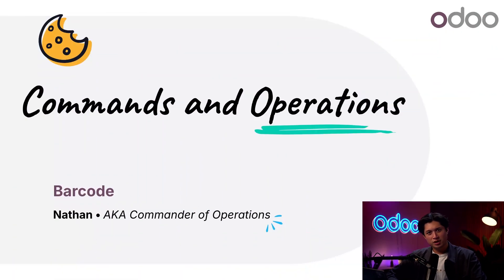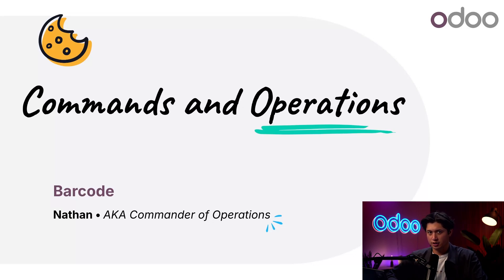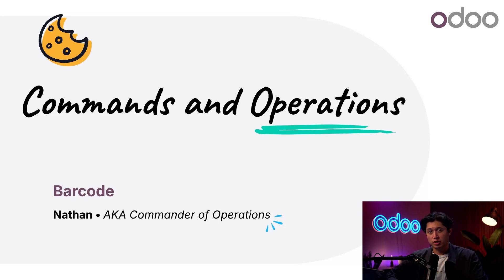What's going on, Odoo-ers! If you know the joy of using a barcode scanner to manage your inventory operations, then you know the last thing we want to do is put down that scanner and touch a button on the screen. Why tap when you could just beep? Fortunately, the barcode app includes a collection of operation types and commands that allow us to skip the touchscreen step and keep on scanning.